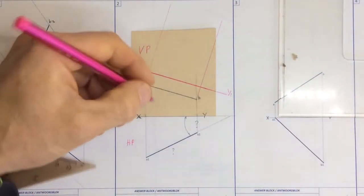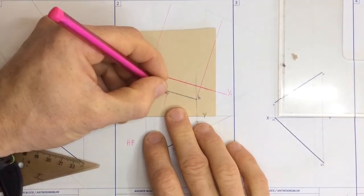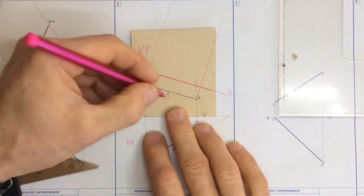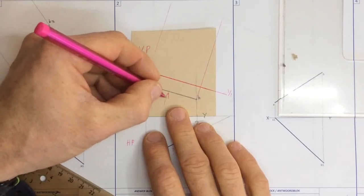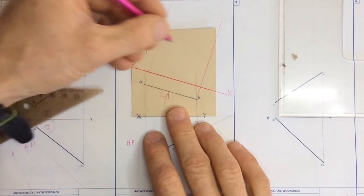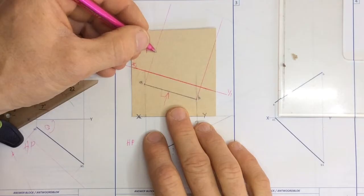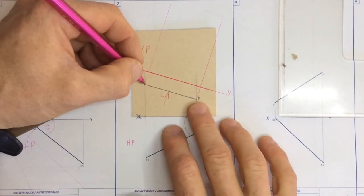And what does that mean? That means that I'm looking in the direction of this line AB at 90 degrees. If I'm looking at 90 degrees to the object, whatever view I'm going to see over here is going to be a true length of whatever that line is.